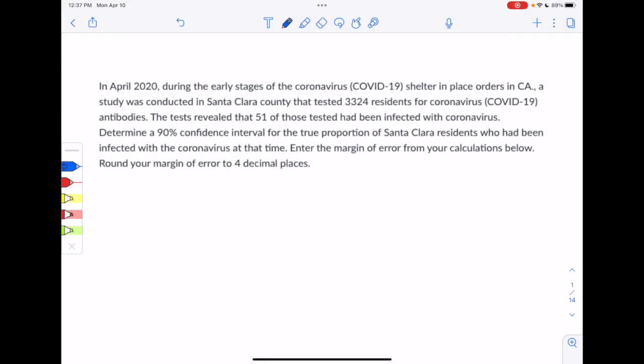Hello, Matt Davis here with more homework quiz help. This one comes from section 8.1. In April 2020, during the early stages of the coronavirus shelter-in-place orders in California, a study was conducted in Santa Clara County that tested 3,324 residents for coronavirus antibodies. The test revealed that 51 of those tested had been infected with coronavirus. Determine a 90% confidence interval for the true proportion of Santa Clara residents who had been infected with the coronavirus at that time. Enter the margin of error from your calculations below and round your margin of error to four decimal places.